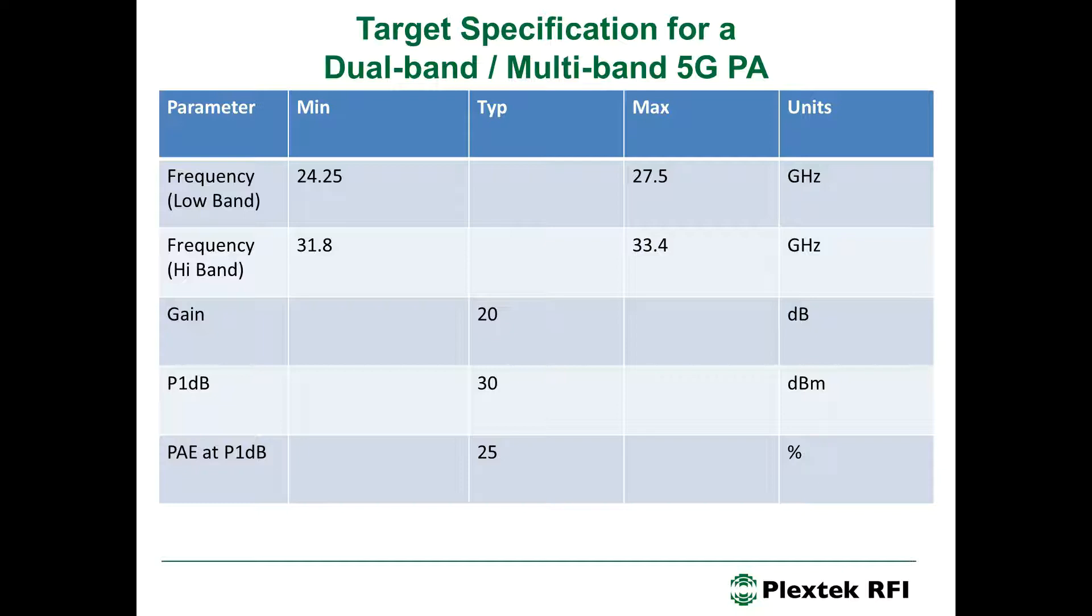Let's look at a specification for a dual band or multiband 5G power amplifier. It should cover the low band, which is the 26GHz band, which stretches from 24.25GHz to 27.5GHz. It should also cover the high band, or 32GHz band, which stretches from 31.8GHz to 33.4GHz. It should have a gain of typically 20 dB in these bands, a P1 dB of typically 30 dBm in these bands, and also a power added efficiency at P1 dB of typically 25%.